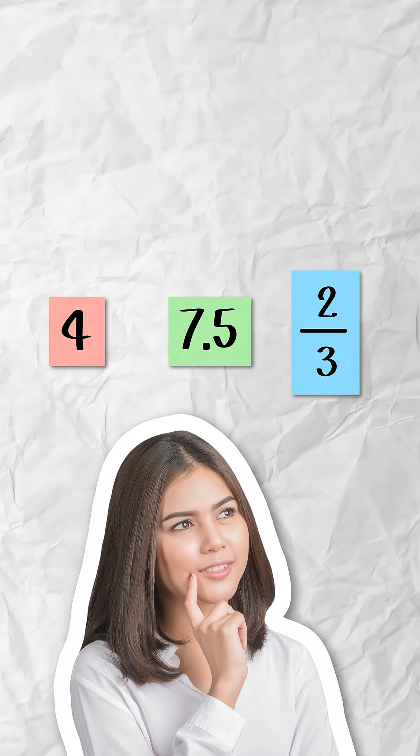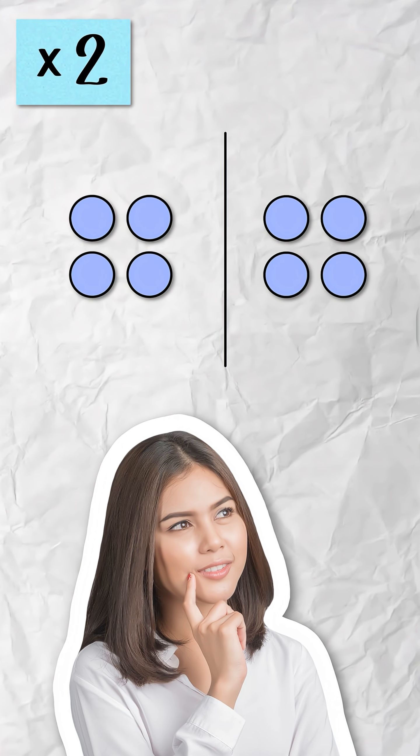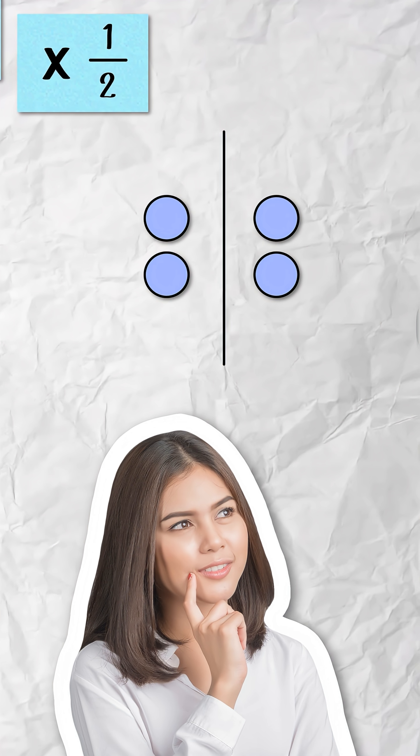Multiplication, whether you're working with whole numbers, decimals, or fractions, can be thought of as making groups with what you're given. When you multiply by two, you're making two groups of what you have. When you multiply by one-half, you're making half a group of what you have.